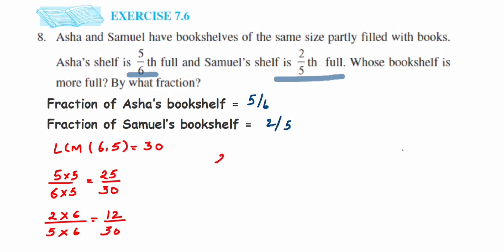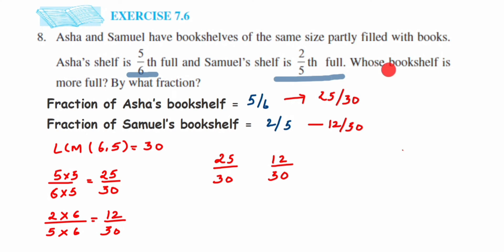Now it's easy to compare them. The first fraction is 25 upon 30 and the second is 12 upon 30. The greater the numerator, the greater the fraction. Since 25 is greater than 12, we can say 25 upon 30 is greater. Since 25/30 is equivalent to 5/6 and 12/30 is equivalent to 2/5, we conclude that five by six is greater than two by five.